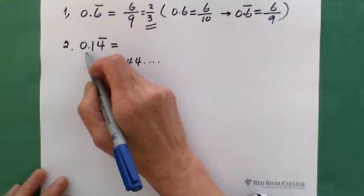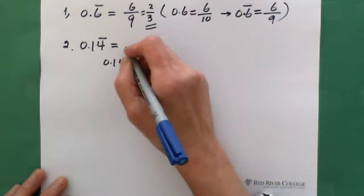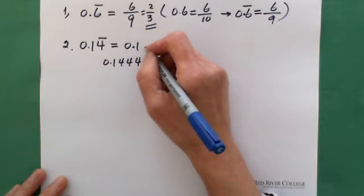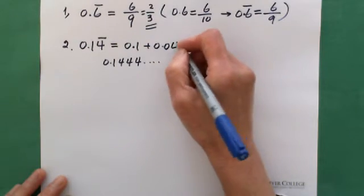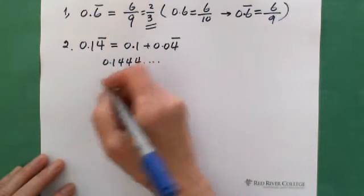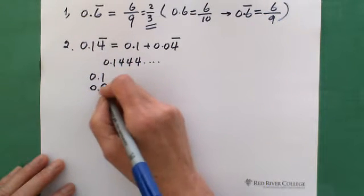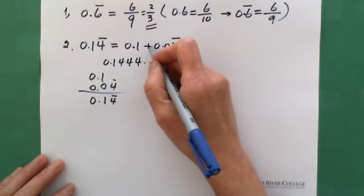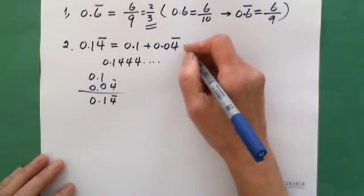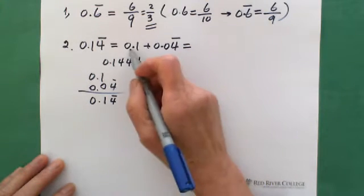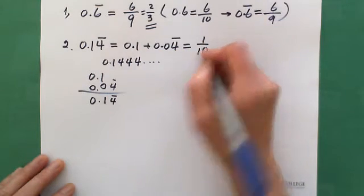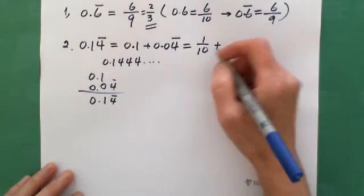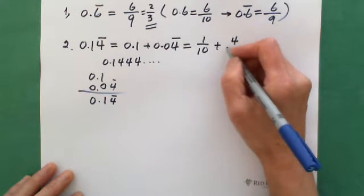We can separate the repeating part from the other part. So 0.14 repeating equals 0.1 plus 0.04 repeating. If you put them in vertical form, 0.1 plus 0.04 repeating gives you 0.1444..., which is 0.14 repeating. Once you separate the repeating portion from the other portion, you convert each part into a fraction. 0.1 is 1 tenth, which is 1 over 10. And for 0.04 repeating, be careful — because the 4 is in the hundredths place, you write it as 4 over 90.